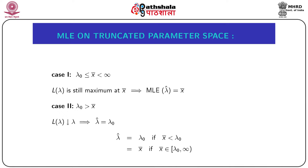This implies the MLE of λ is again x̄. Case 2: λ₀ > x̄. Since the parameter space starts after x̄, the likelihood function L(λ) is monotone decreasing in λ over [λ₀, ∞), so L(λ) attains its supremum at λ₀. Thus the MLE of λ is λ₀ itself. Combining both cases: the MLE of λ equals λ₀ if x̄ < λ₀, and equals x̄ if x̄ ∈ [λ₀, ∞).